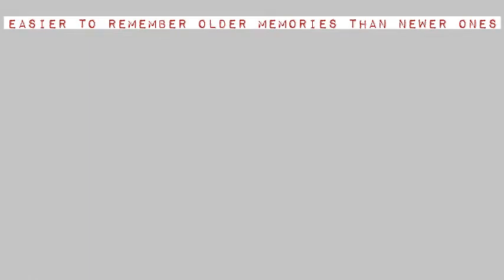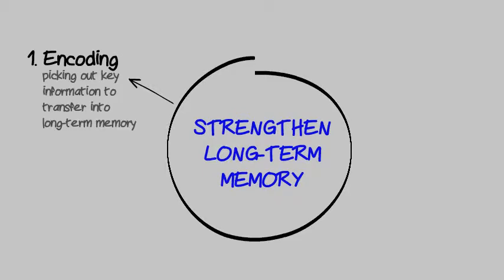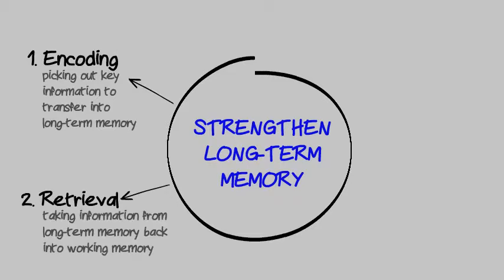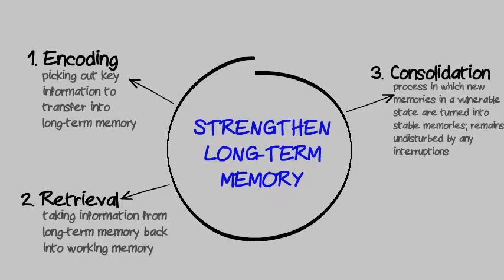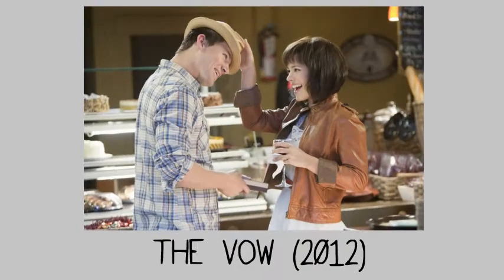It is easier to remember older memories than newer ones because older memories are strengthened through four steps. The first is encoding: the process of picking out key information to transfer into long-term memory. The second is retrieval, which is the process of taking information from long-term memory back into working memory. The third is consolidation — when new memories are made, they are in a vulnerable state, and consolidation makes them stable, allowing them to resist disturbances. The last is reconsolidation, which occurs when memories are retrieved back into working memory, putting them back into a vulnerable state and requiring consolidation again.